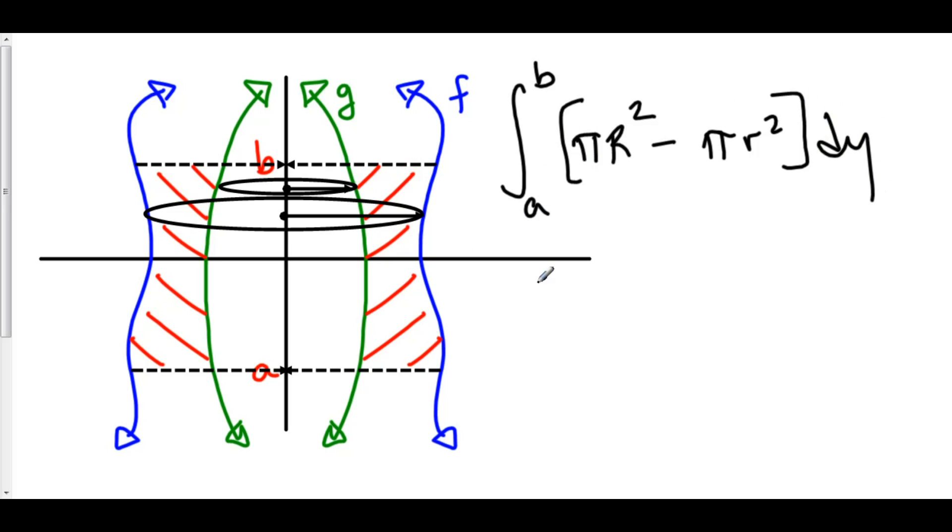And of course, we can pull out the pi all over again. So this is pi times the integral from A to B of your big radius squared minus your little radius squared, dy. Where your big radius is the distance from your axis of revolution to the edge of your region on the far side. And little r is the distance from your axis of revolution to the beginning of your region, the closest part of your region.